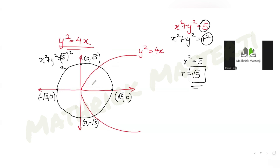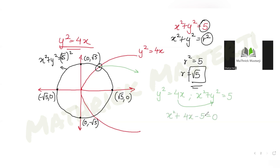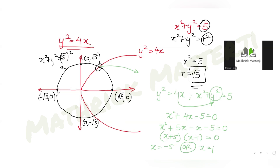Now let's find the intersection point of the two curves. Using y² = 4x and x² + y² = 5, I substitute y² = 4x to get x² + 4x − 5 = 0. Factoring gives (x + 5)(x − 1) = 0, so x = −5 or x = 1. Since x = −5 lies outside the region, we take x = 1.